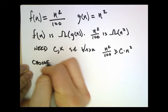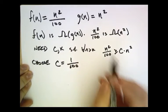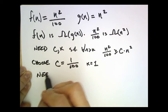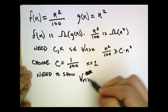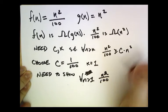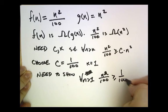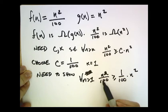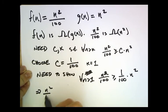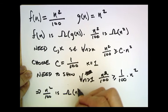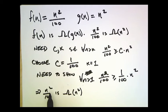I'm going to choose c to be 1 over 100 and k to be 1. Then we need to show that for all n greater than 1, n squared over 100 is greater than or equal to 1 over 100 times n squared. But this is self-evident — n squared over 100 equals 1 over 100 times n squared, so certainly for all n greater than 1 this holds. This implies n squared over 100 is big Omega of n squared. Note that n squared over 1,000 and n squared over a million are also big Omega of n squared, since big O and big Omega usually hide constants.